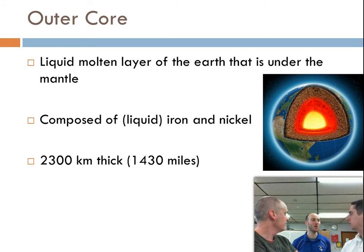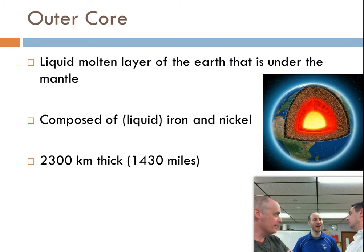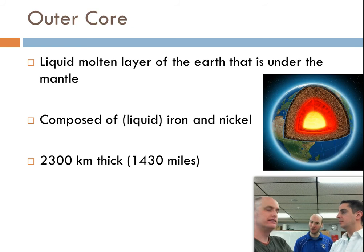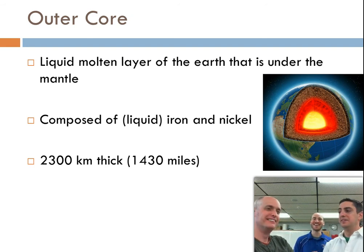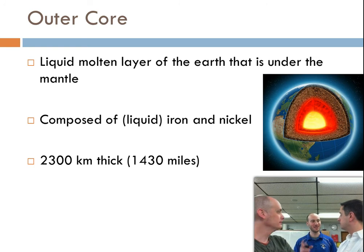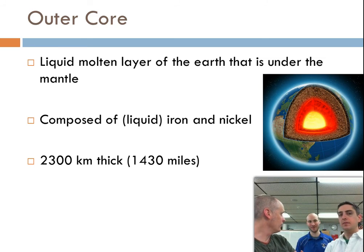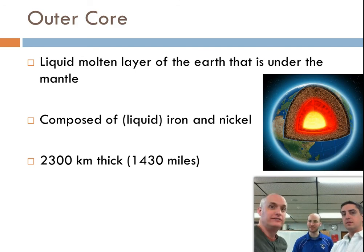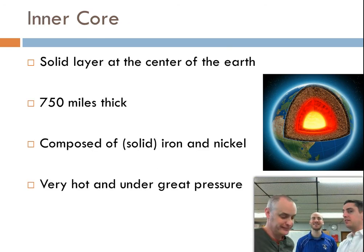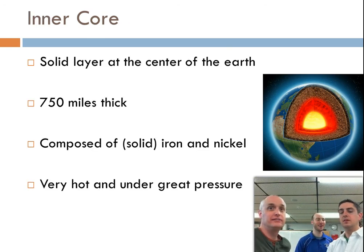Going a little further down, you get to the core — the middle, like an apple core, or like the core of your body if you're a weightlifter. The core is mostly iron and nickel because that is the densest stuff in our Earth — it sank to the bottom a long time ago. The outer core is liquid — not a goo like the mantle, but straight-up liquid. It is 2,300 kilometers thick, which is about 1,430 miles. Going a little further down, you suddenly hit a really solid layer called the inner core.